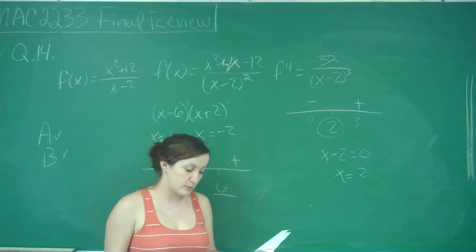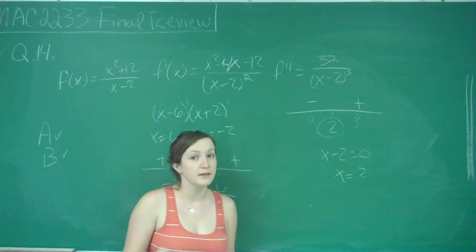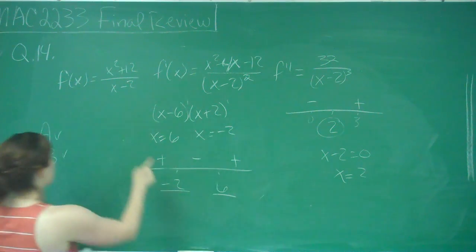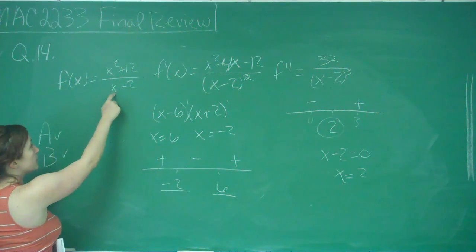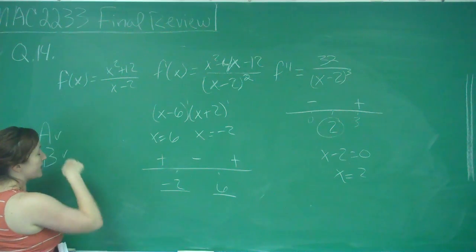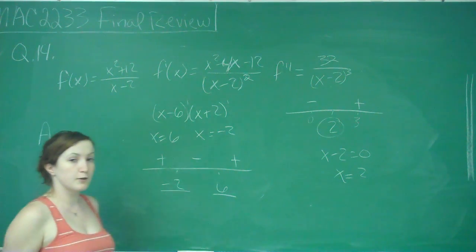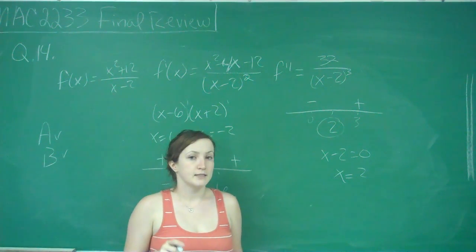However, it gives us the hint to be sure to consider domain, so that should be a little tip. Because if we look back at our first function, we have x minus 2 as our denominator here, which means that we've got a vertical asymptote at x equals 2.